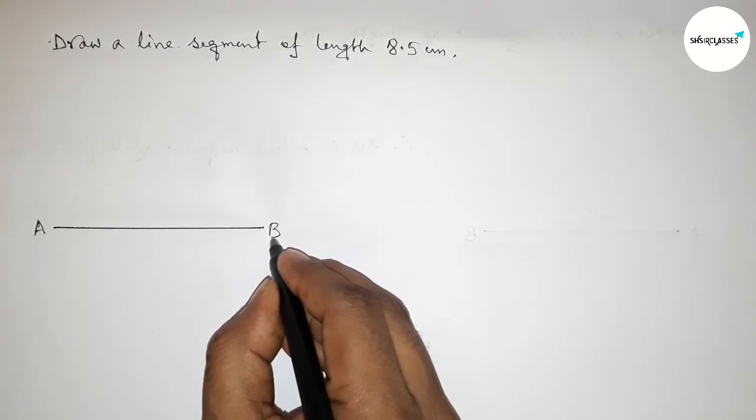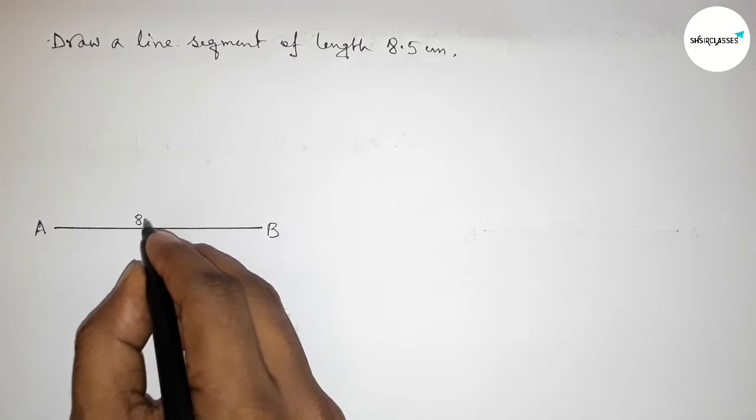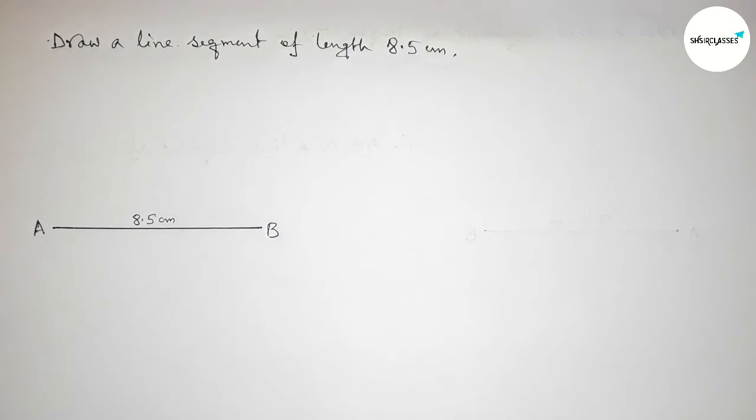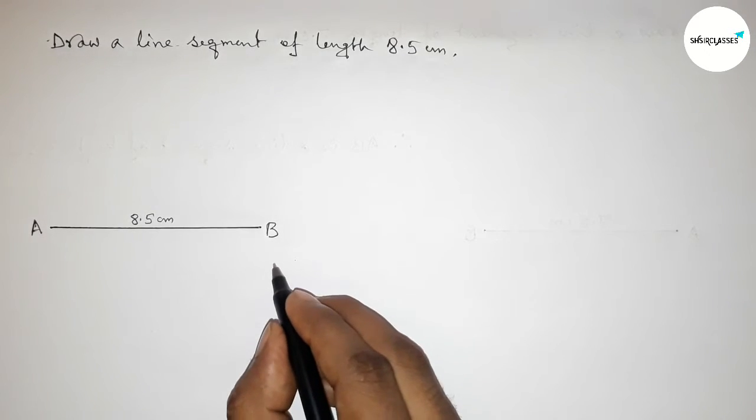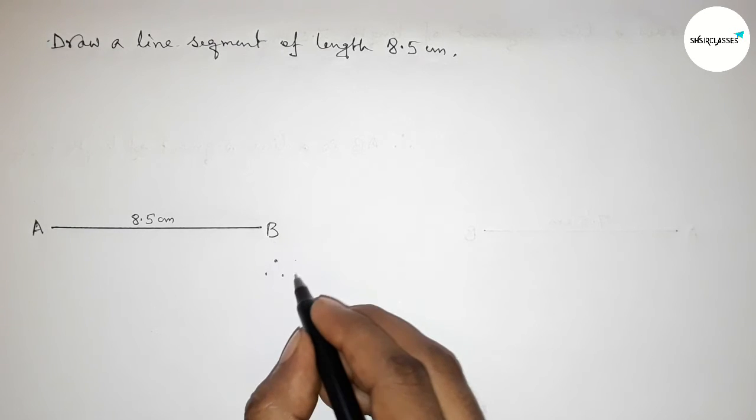Here B. So AB is a line segment of length eight point five centimeters. So therefore here now we can...